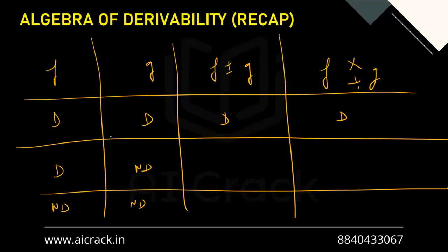In Case 2 — one differentiable and one not differentiable — F ± G will definitely be non-differentiable. But F × G may or may not be differentiable; it depends on the specific functions.